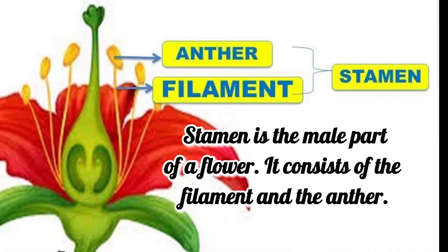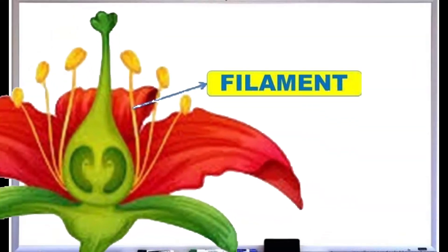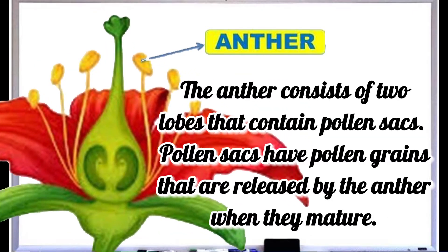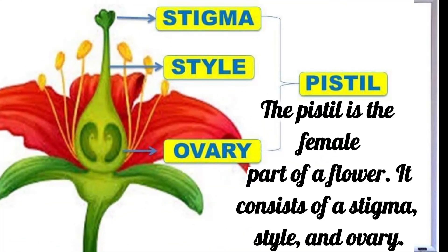Stamen: the stamen is the male part of a flower. It consists of the filament and the anther. The filament holds the anther in a position to release the pollen. The anther consists of two lobes that contain pollen sacs. Pollen sacs have pollen grains that are released by the anther when they mature.